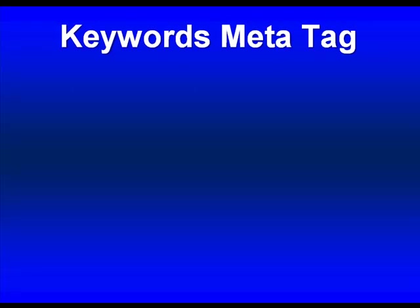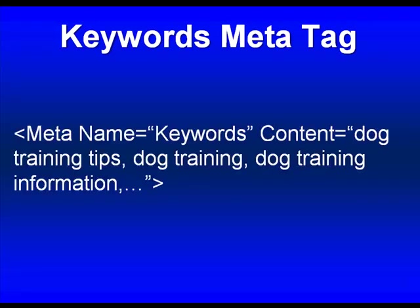Keywords meta tag. This is another chance for us to tell the search engines the keywords that are important on this page. If you're trying to rank for a keyword phrase, you certainly want to put them in here. The code is: meta name equals keywords, content equals 'dog training tips, dog training, dog training information,' and whatever else is relevant. Back in the good old days, people used to keyword stuff — putting a bazillion keywords in there — but that trick doesn't work anymore. In fact, it can hurt you. I'd suggest having five to ten keywords that describe your site.